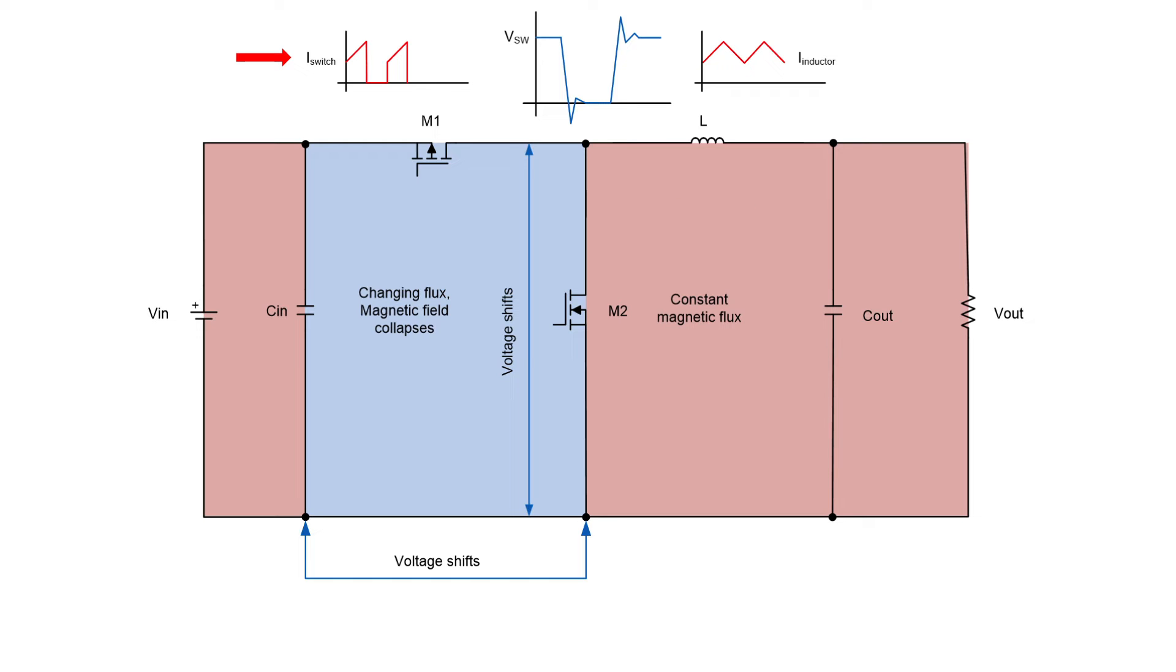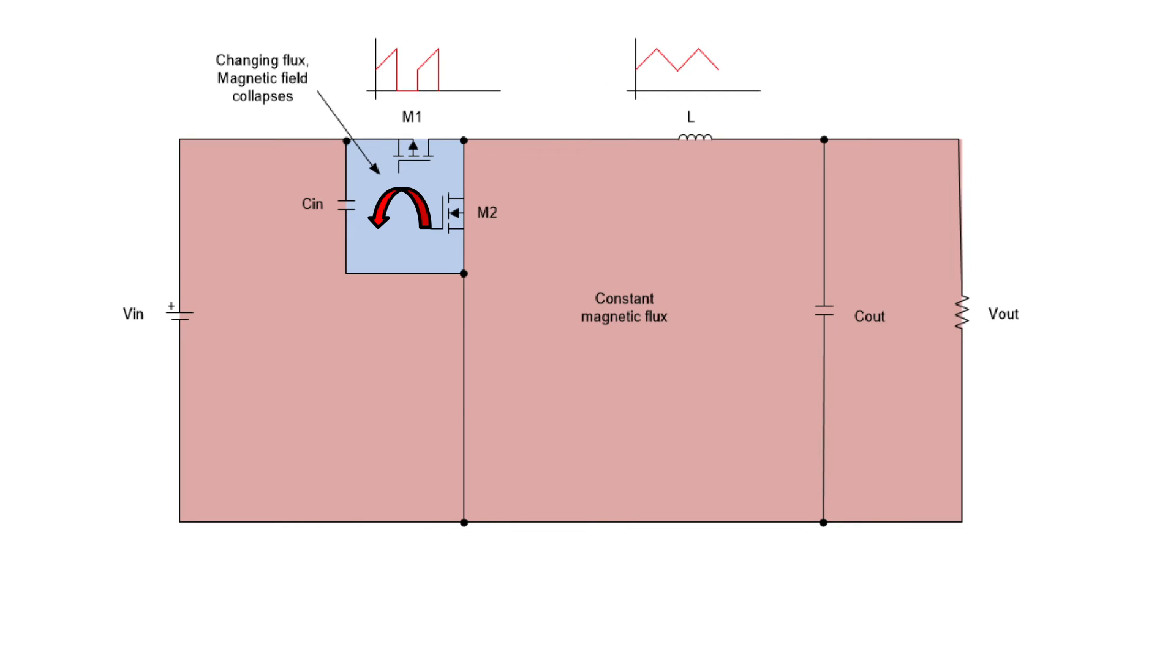The input current is discontinuous with high change in current and high change in magnetic field. Therefore any parasitic trace inductance will cause voltage shifts as well as voltage spikes. To minimize this effect we need to minimize parasitic trace inductance by really making this input loop as small as possible. The most effective way to do this is to place the input capacitor directly from the input pin to the power ground pin of your circuit.